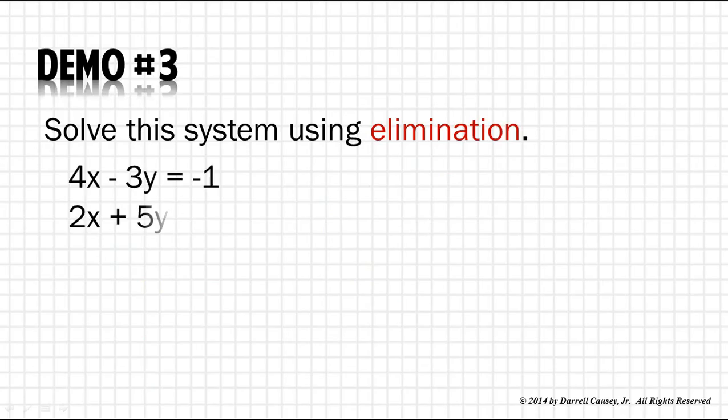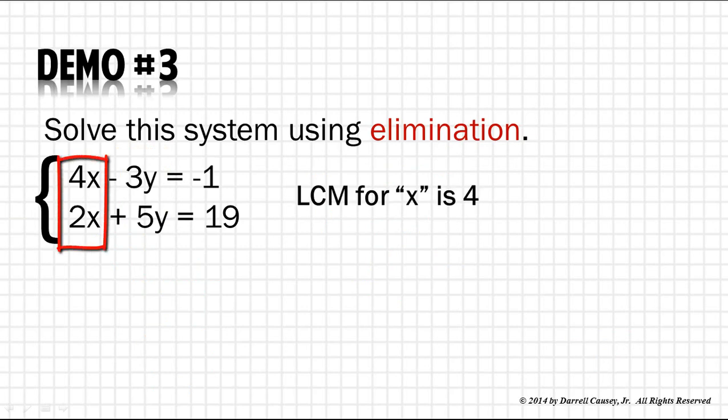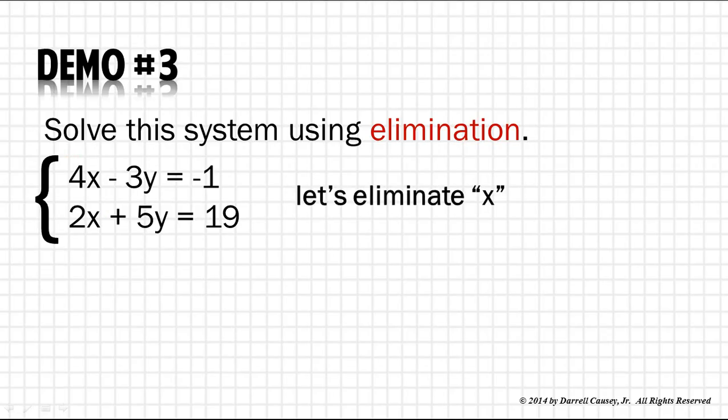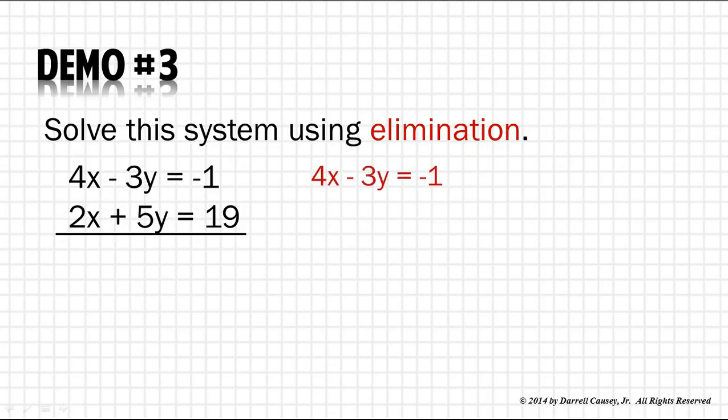Demo number 3. Two linear equations. This time, we've got a different situation. We've got a lowest common multiple of 15 for the 3 and the 5, and we have lowest common multiple of 4 for x. That's the easiest path. We're going to eliminate x again. This time, I'm not going to multiply the top by anything. I'll just rewrite it.